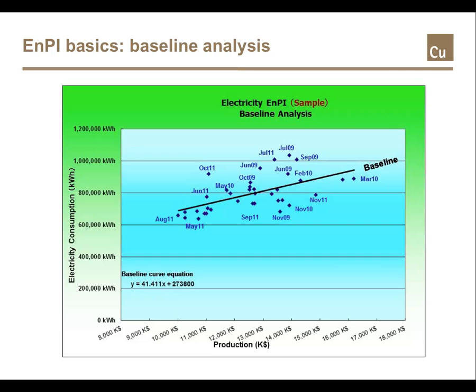That creates 36 plot points from the data for 12 months by 3 years. The black line is plotted from an average of the scatter. This average line will be called the energy performance baseline.